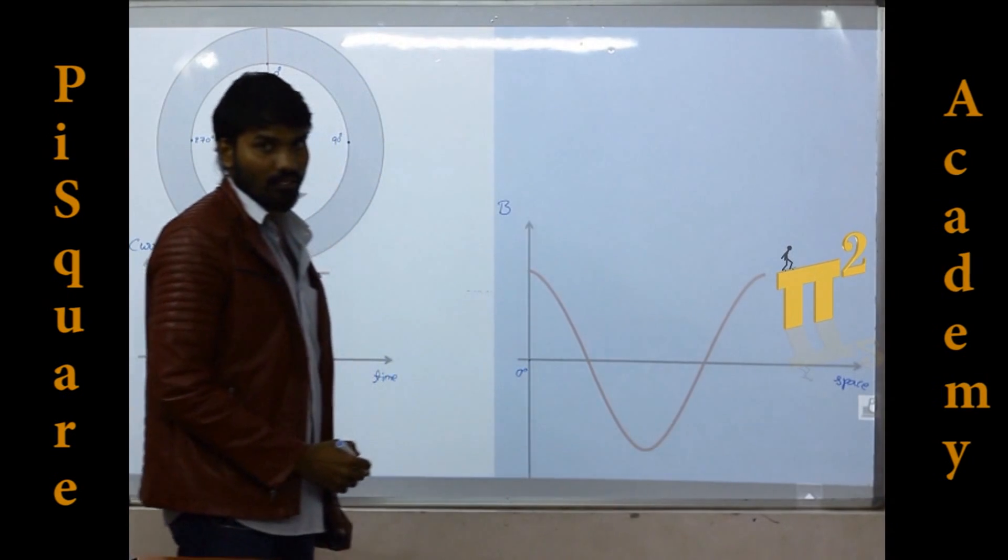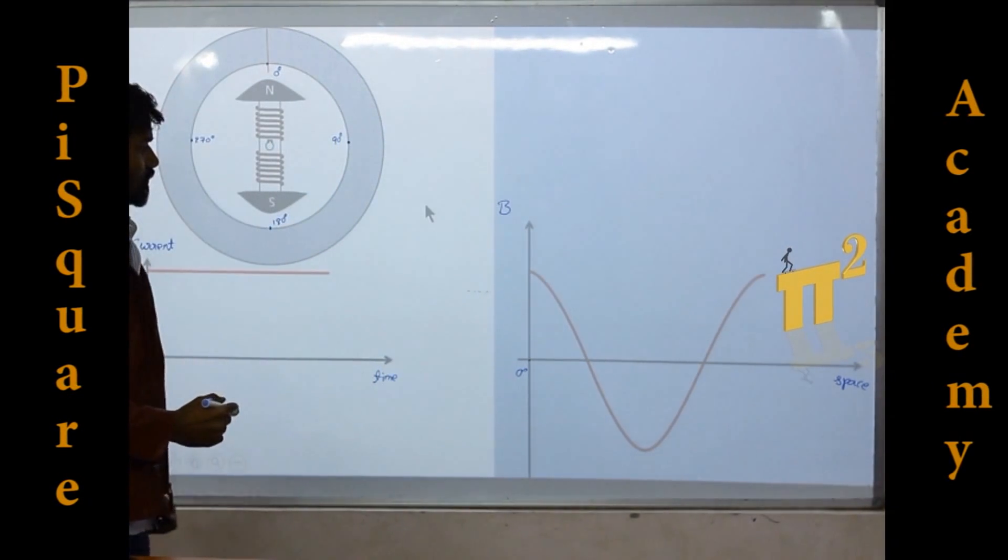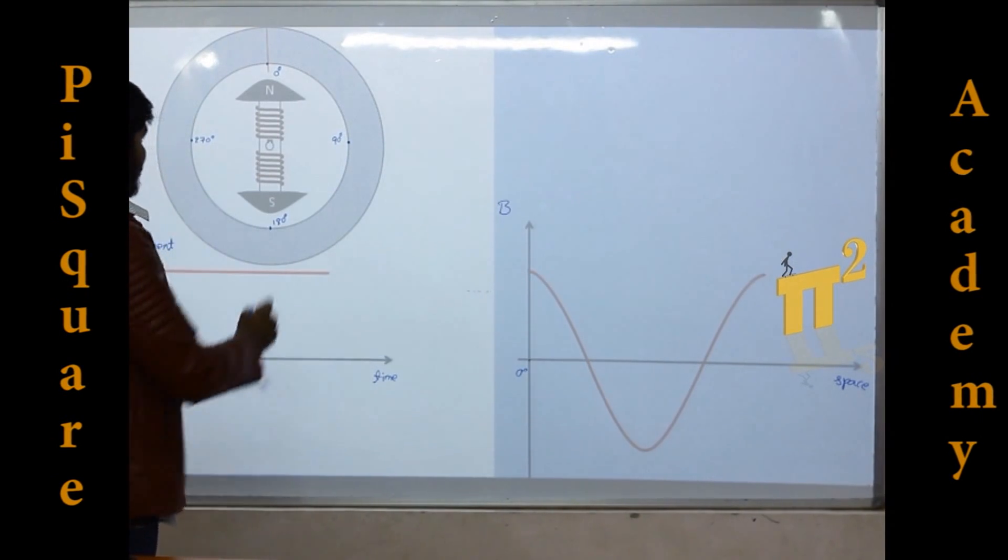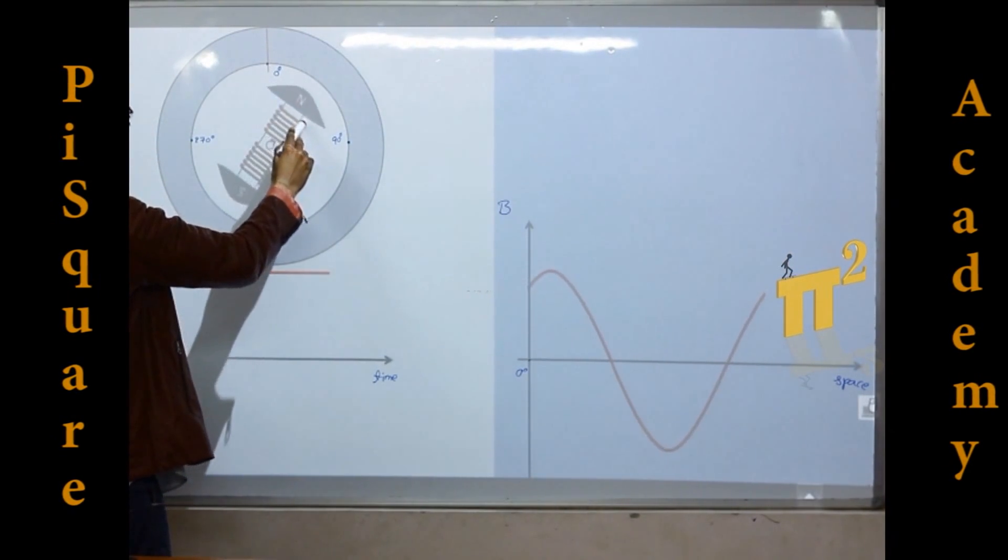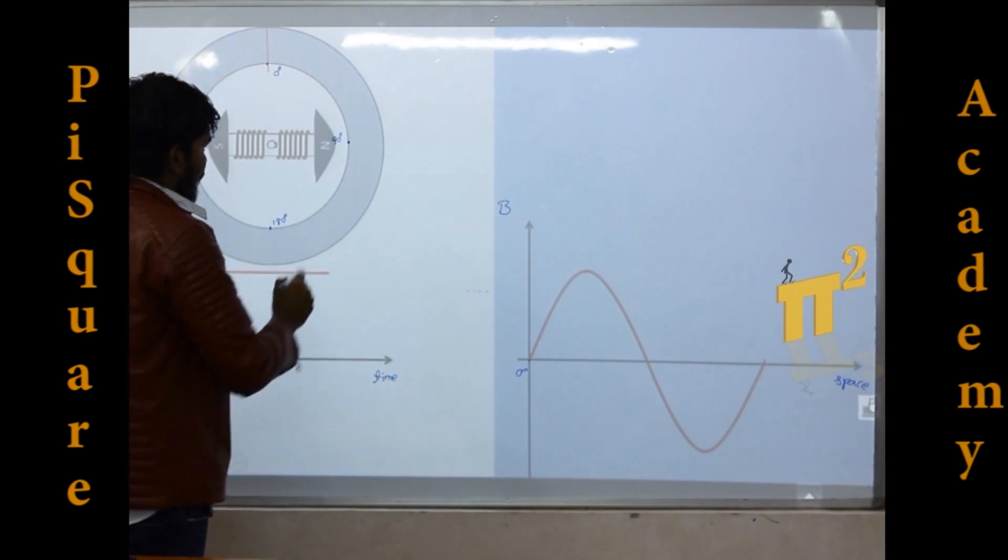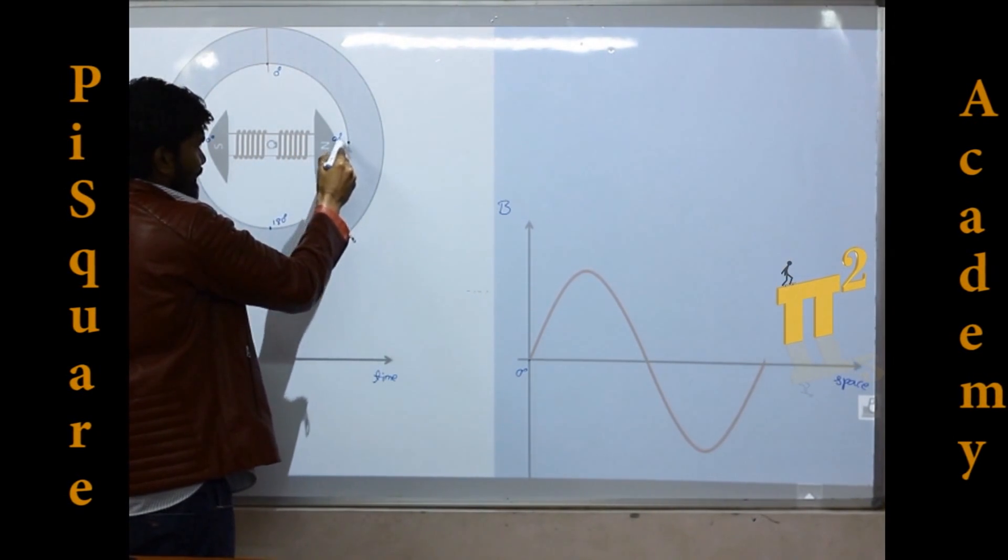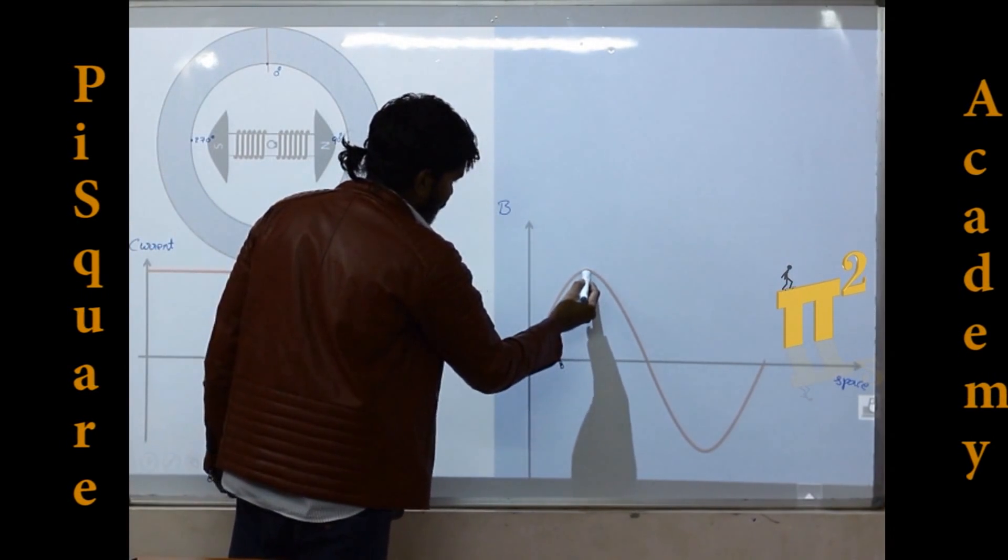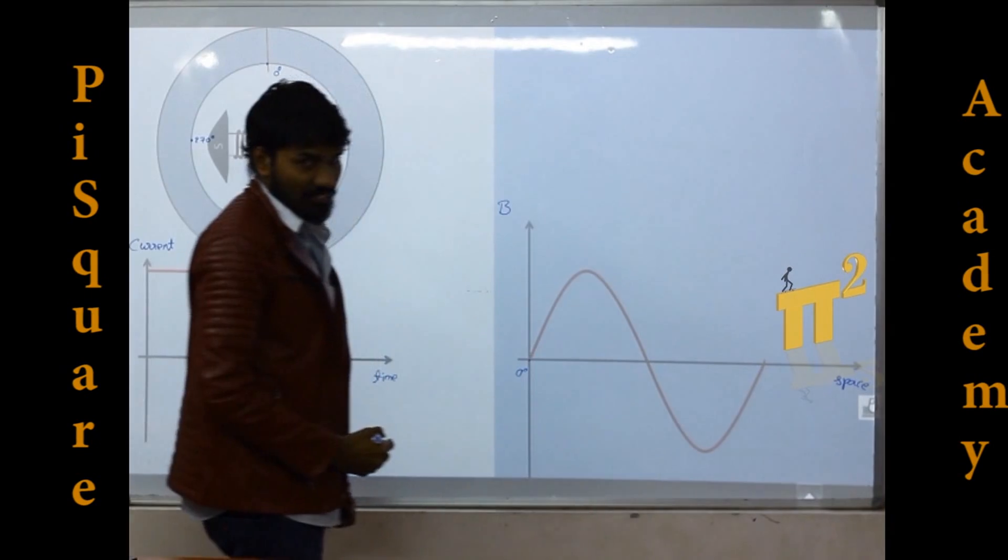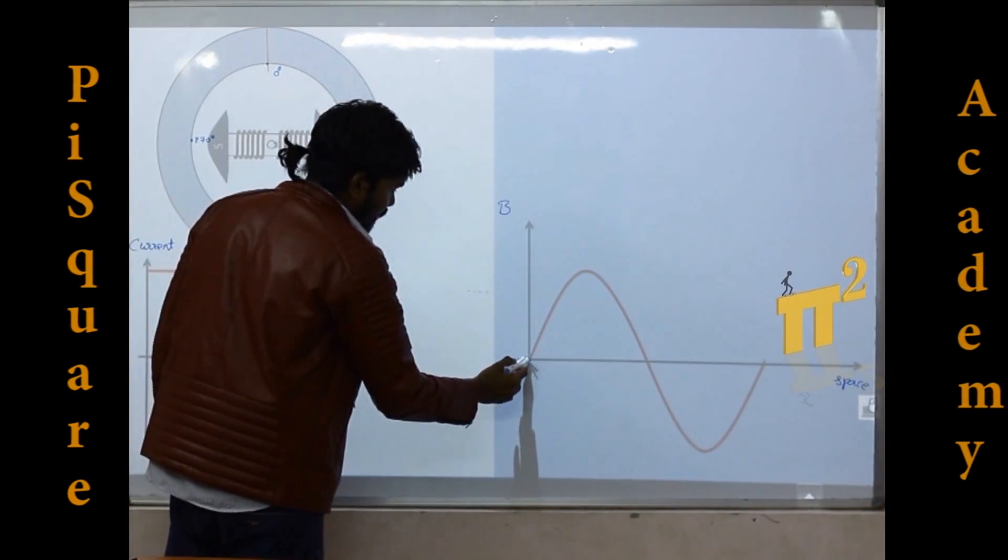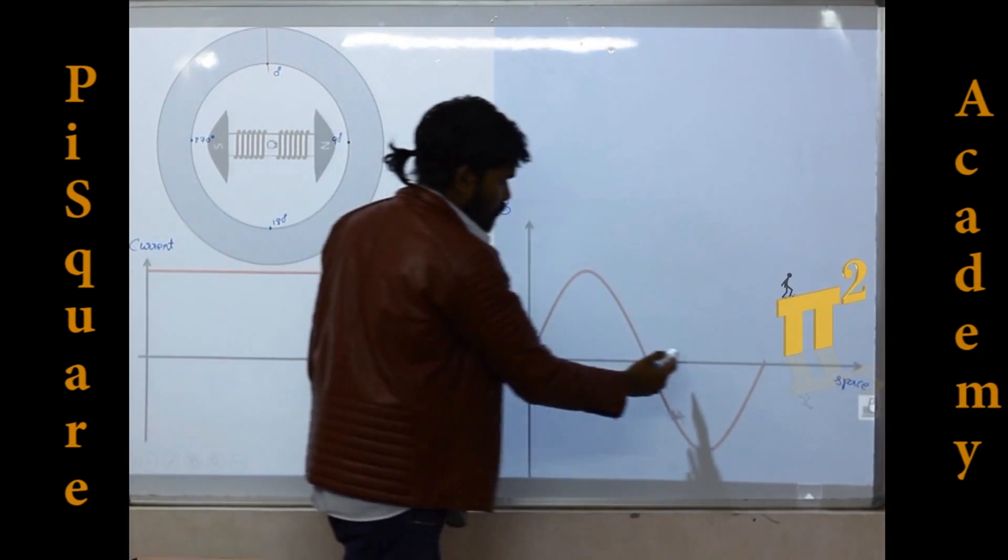Now what if rotor rotates? If the rotor is rotating, see here, rotor takes a 90 degrees rotation. Now at 90 degrees in space, we have maximum flux density. At 0 degrees in space we have 0, and so on at each instant.